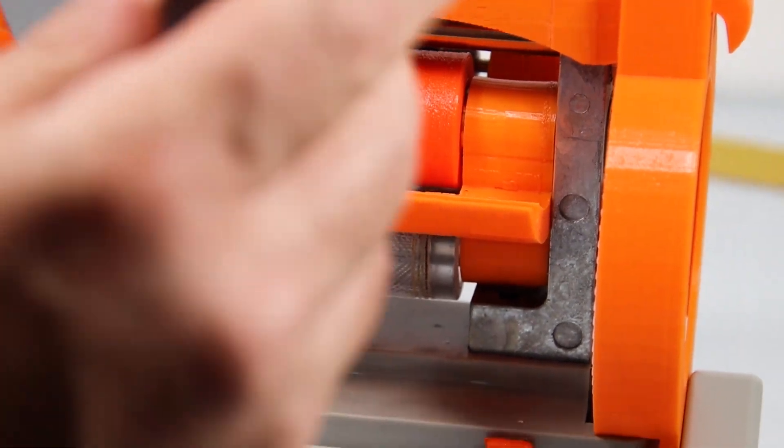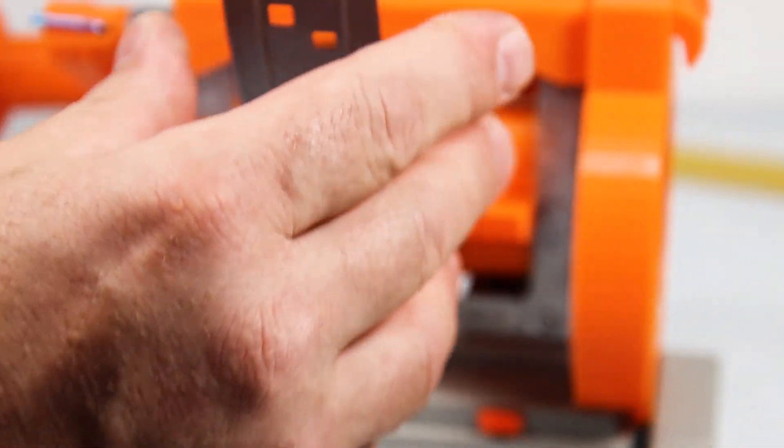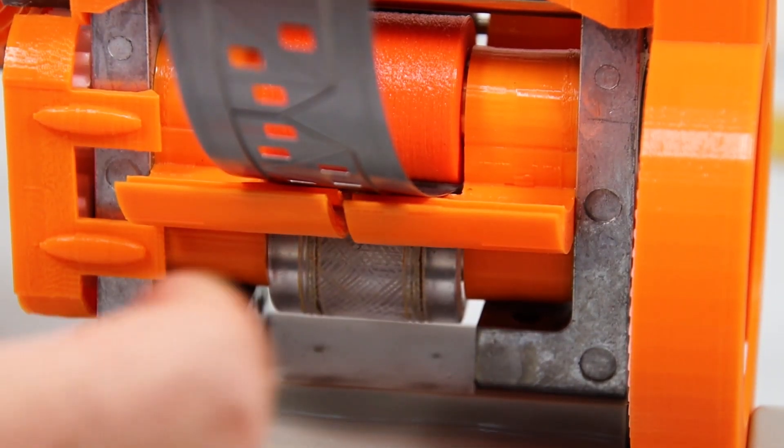So first, you're going to insert the cutting die into this slot, and then start rolling the cutting die in just a little bit.